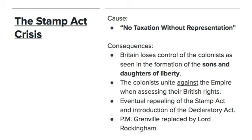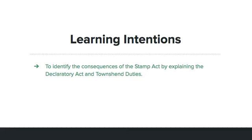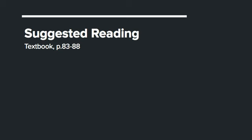What we're going to cover today is the eventual repeal of the Stamp Act and the replacement of Prime Minister George Grenville with Lord Rockingham, and then subsequently Charles Townshend. The learning intention for today is to identify the consequences of the Stamp Act by explaining the Declaratory Act and Townshend Duties. If you're following in your textbook, you can read pages 83 to 88 to get a better idea of what we're going to go through today.